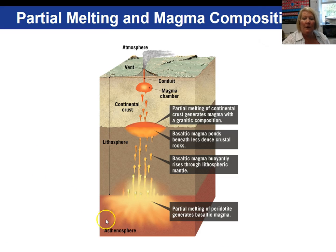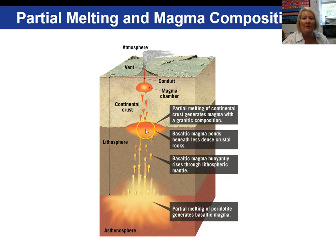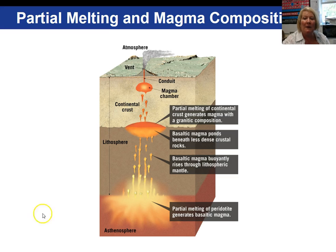Here's a diagram starting with peridotite making up the mantle. We partially melt the peridotite, which creates a basaltic magma. Because basalt is less dense than peridotite, it rises up to the bottom of the continental crust, where it ponds. Partial melting of the continental crust then generates magma with a granitic composition. So we begin with an ultramafic composition and end up with a felsic composition.